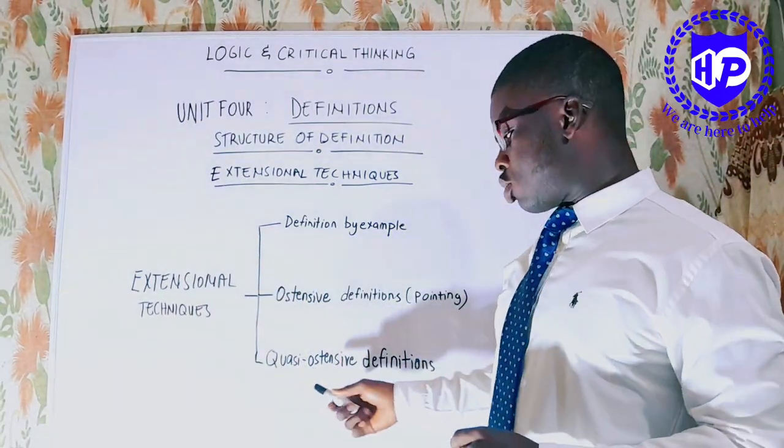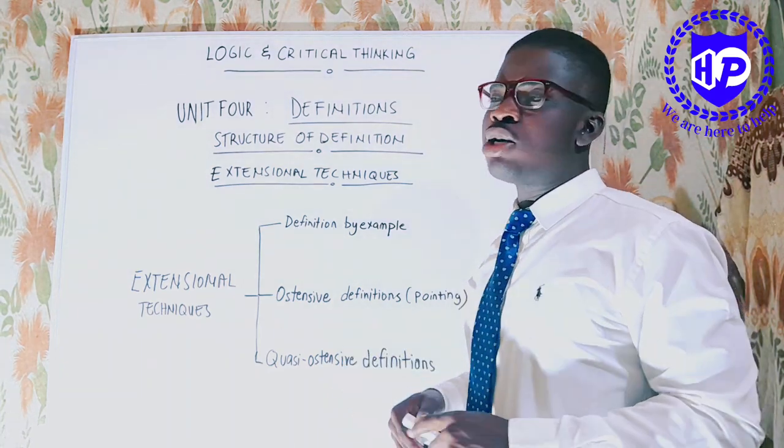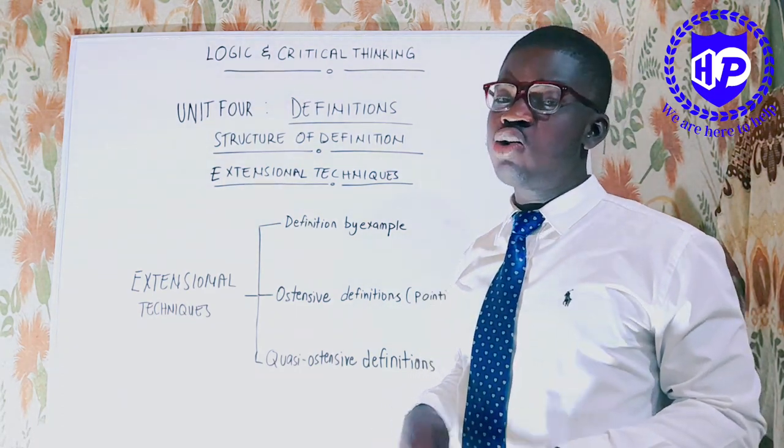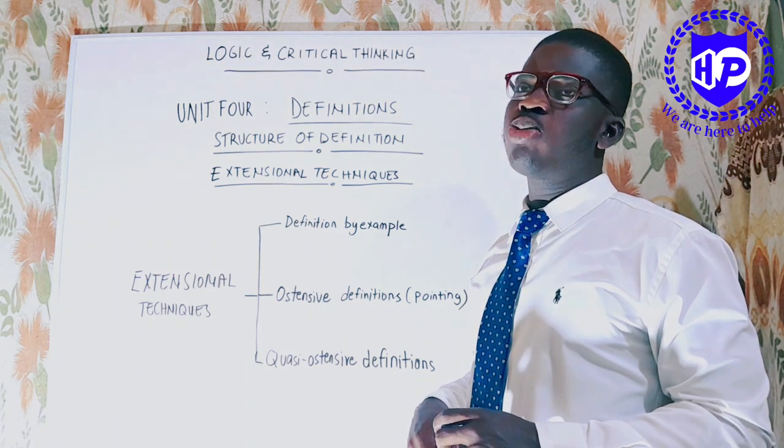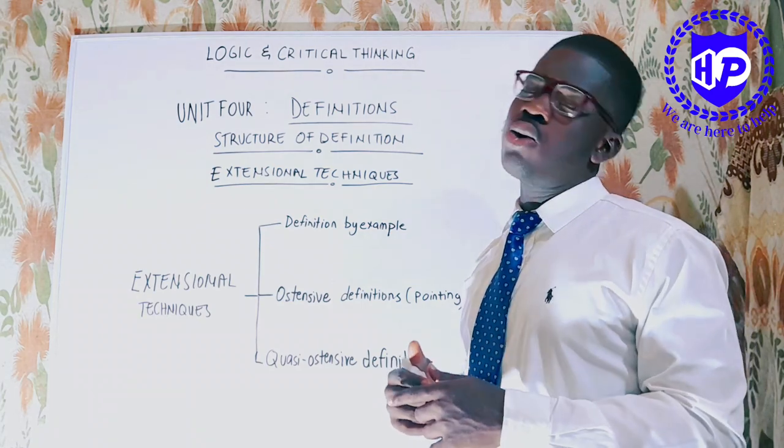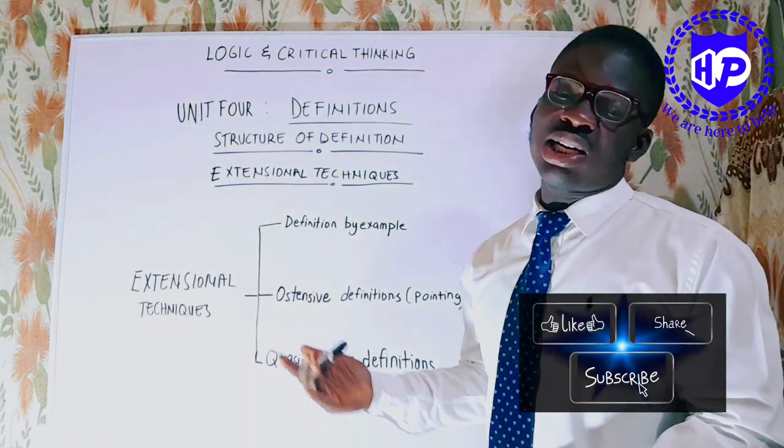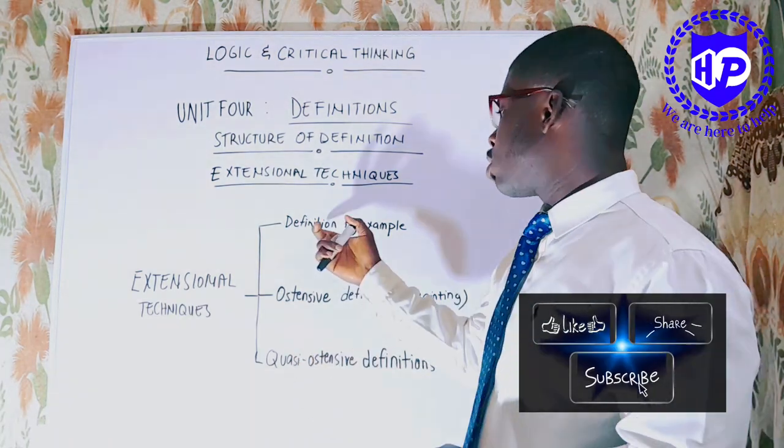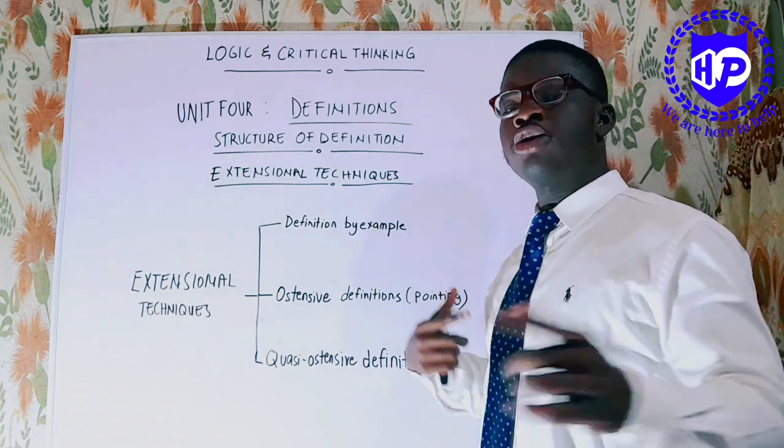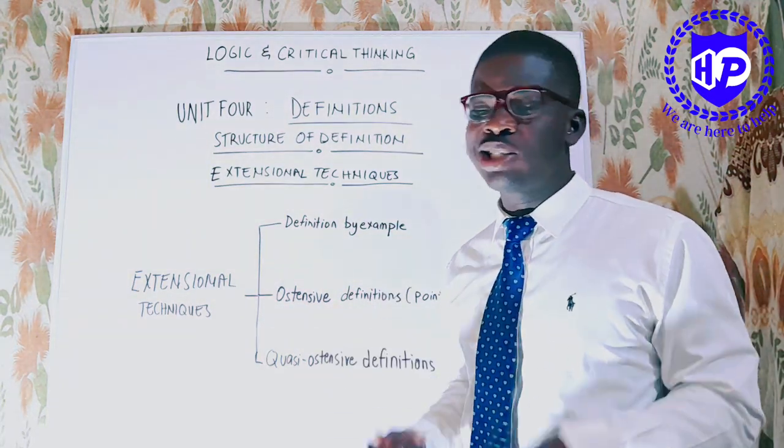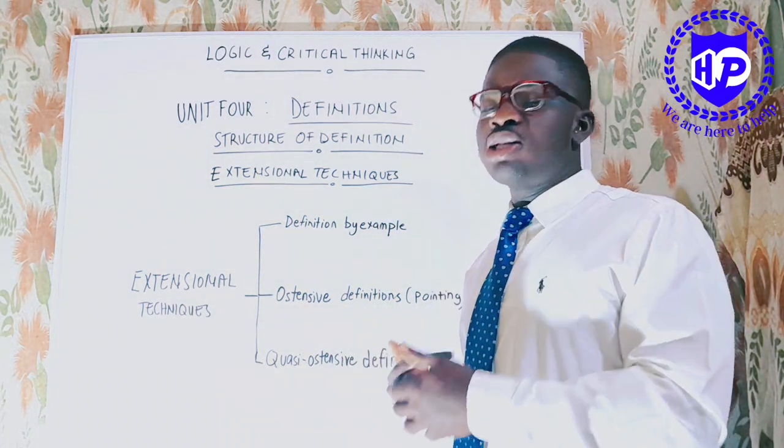With those things you can't point at them like this. That's where we see ostensive definitions coming. That's dealing with pointing and describing. Let's say a unicorn. No one has ever seen a unicorn before. So you can only point at it by describing it. So these are the extensional techniques: by example, and ostensive, which points by describing.